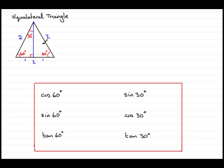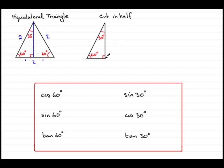I'll draw that triangle out again. If we cut the equilateral triangle in half, this length is going to be half of this side. So put a one there and the hypotenuse would be two units.